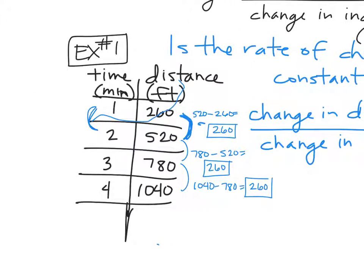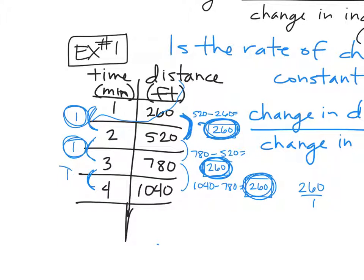Then I got to look here. Is my change in each one of these the same? 2 minus 1 is 1, 3 minus 2 is 1, 4 minus 3 is 1. So we're just subtracting each time. That means my rate of change is this number, the change in my y, over this number, the change in my x. So I'm going to go 260 over 1 is my rate of change. Notice if I jump down a level, 260 over 1. If I jump down one more level, 260 over 1. So if it stays the same all the way through, then my rate of change is constant.